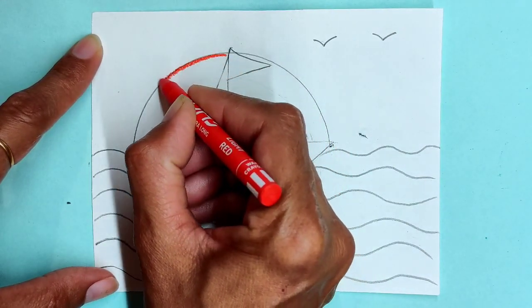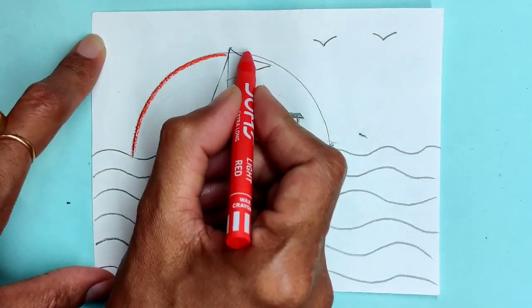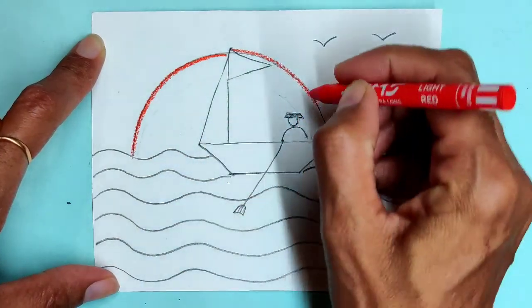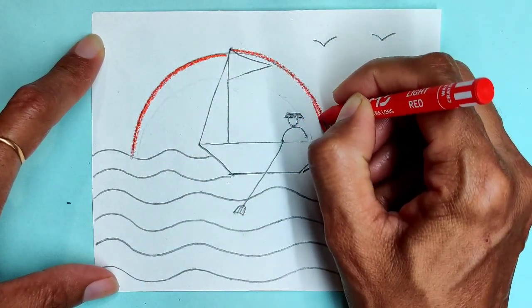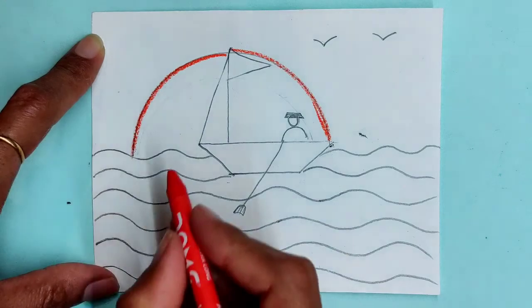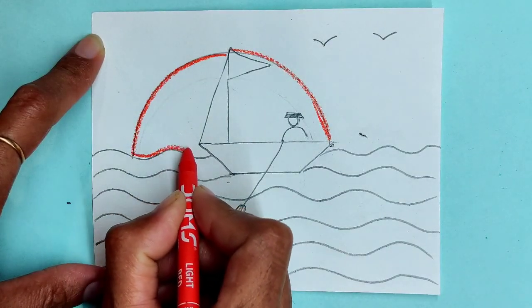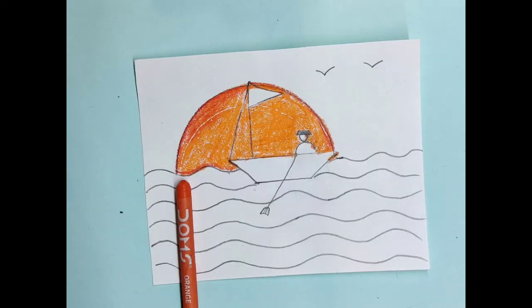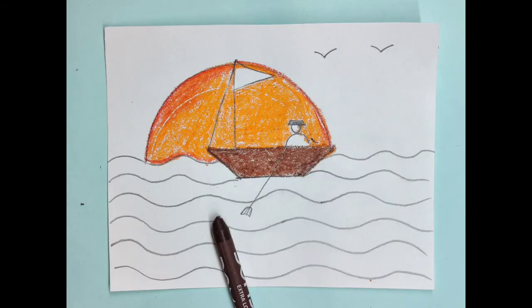Draw a red outline on the sun drawing. Fill orange color in the sun and brown color in the boat.